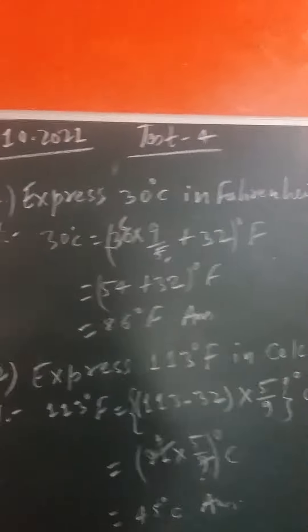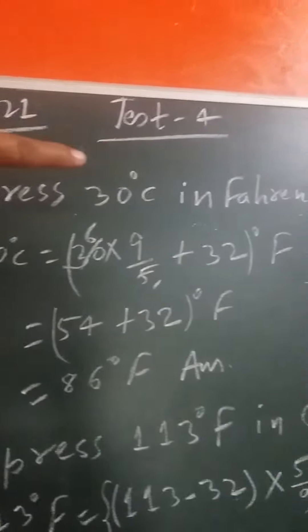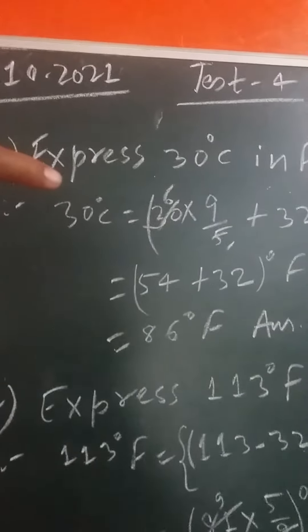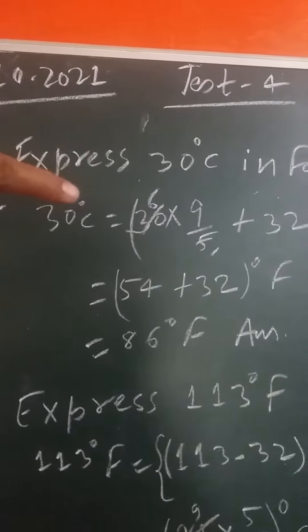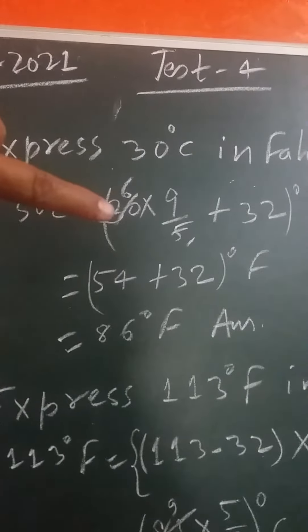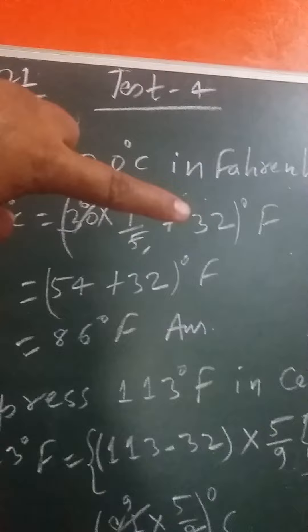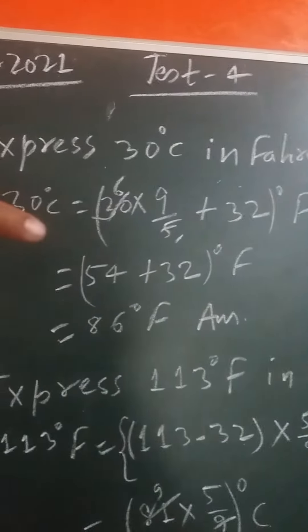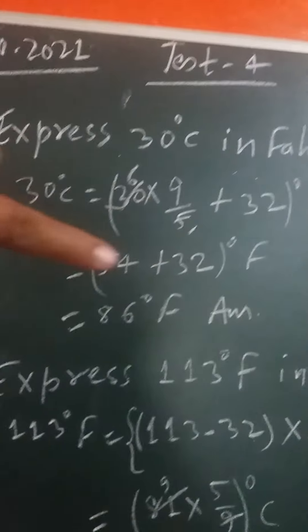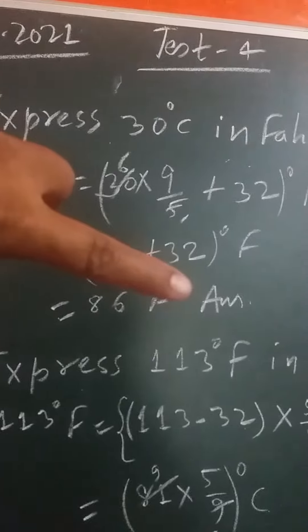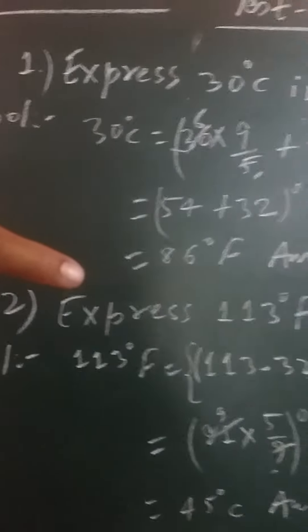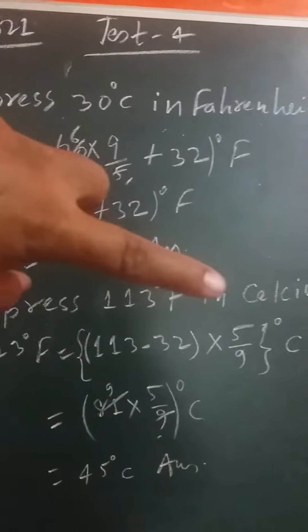The first question is express 30 degrees Celsius in Fahrenheit scale. To solve this question we have to do according to this: 30 degrees Celsius equals 30 multiply by 9/5 plus 32 degree Fahrenheit, that is 54 plus 32 degree Fahrenheit, that is 86 degree Fahrenheit. Answer.